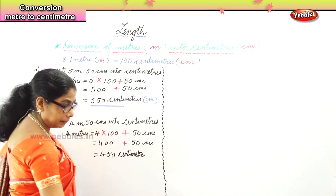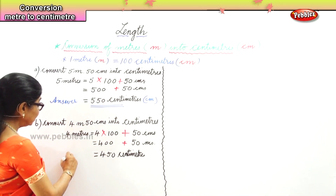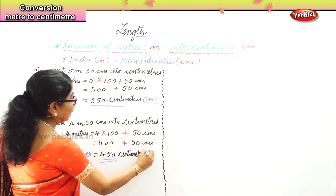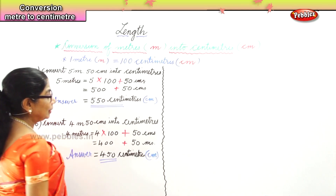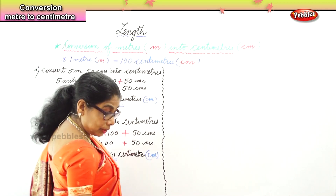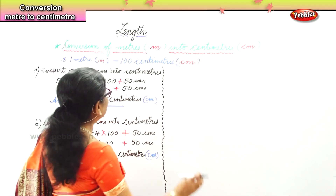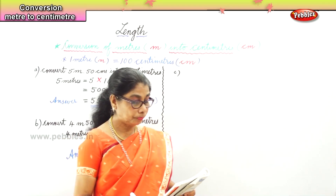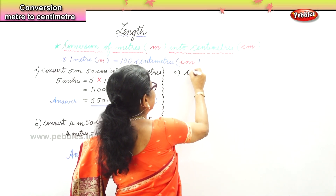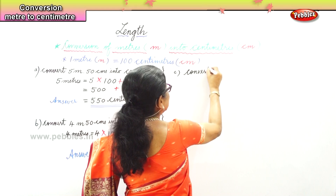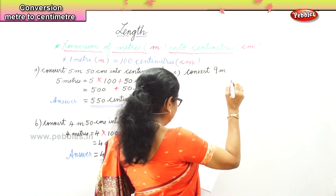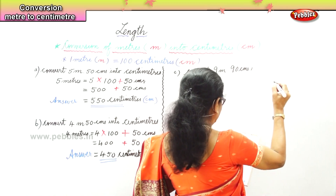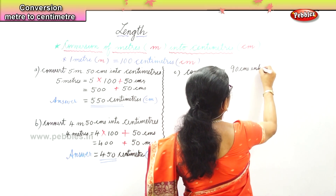That is our answer. Our answer is 450 centimeters — the short form is cm. Let's work out another sum. The third sum I have for you is: convert 9 meters 90 centimeters into centimeters.